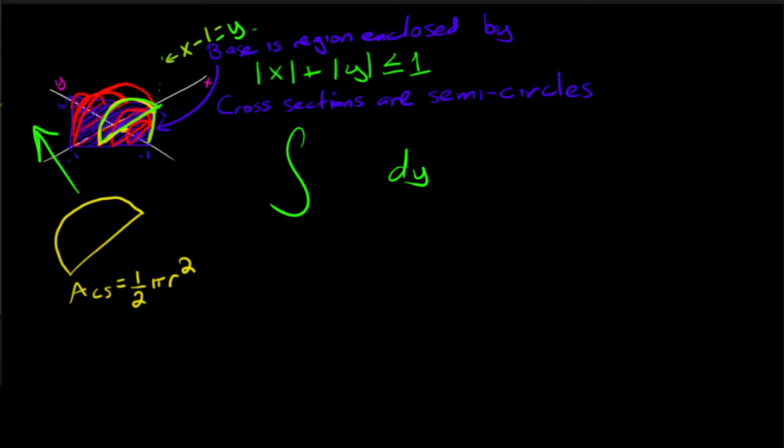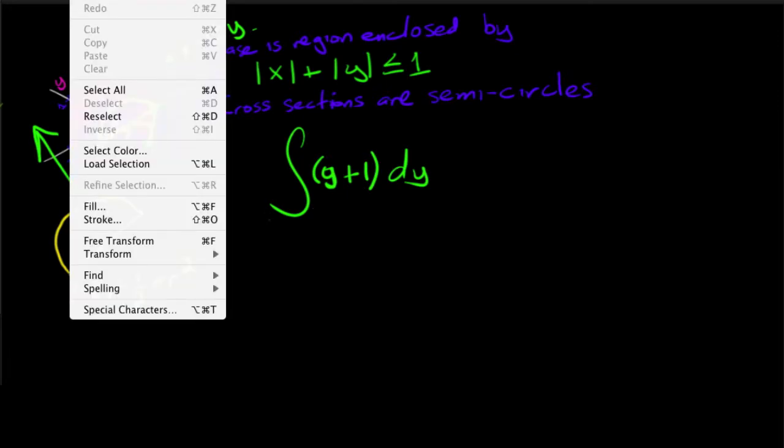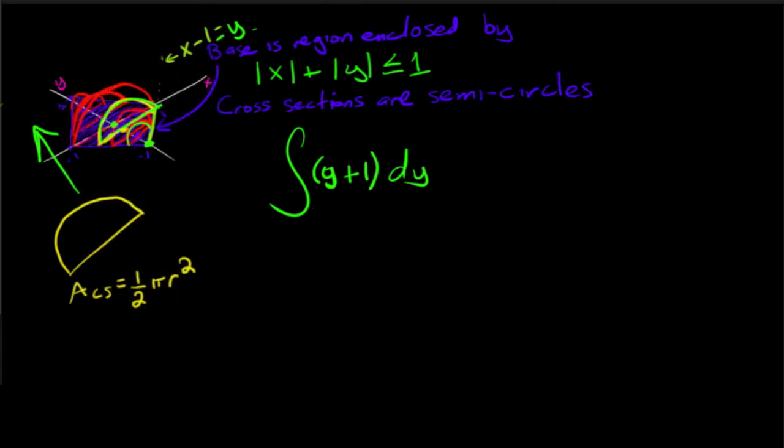So then what this means is that I'm going to have to solve for x. So I would get that the area of the semi-circles from here to here are going to be y plus 1. And that's going to be from negative 1 to 0.